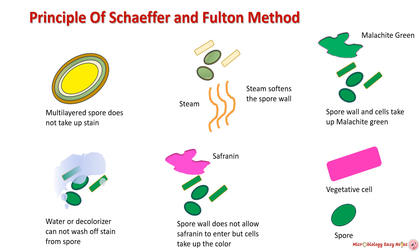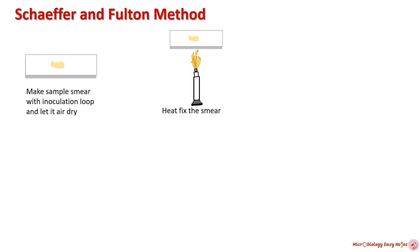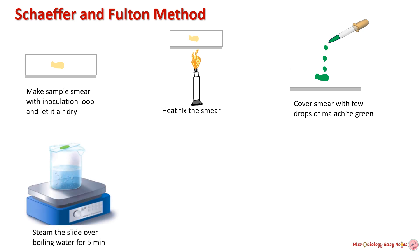Procedure for Sheffer-Fulton staining: a bacterial culture containing both vegetative cells and spores is spread onto a glass slide and allowed to air dry to fix the cells to the slide. The slide is gently heated, which also helps in killing vegetative cells and making the spores more accessible to staining. Malachite green is applied to the heat-fixed smear. The slide is then heated over boiling water for five minutes to allow the malachite green to penetrate the spores.